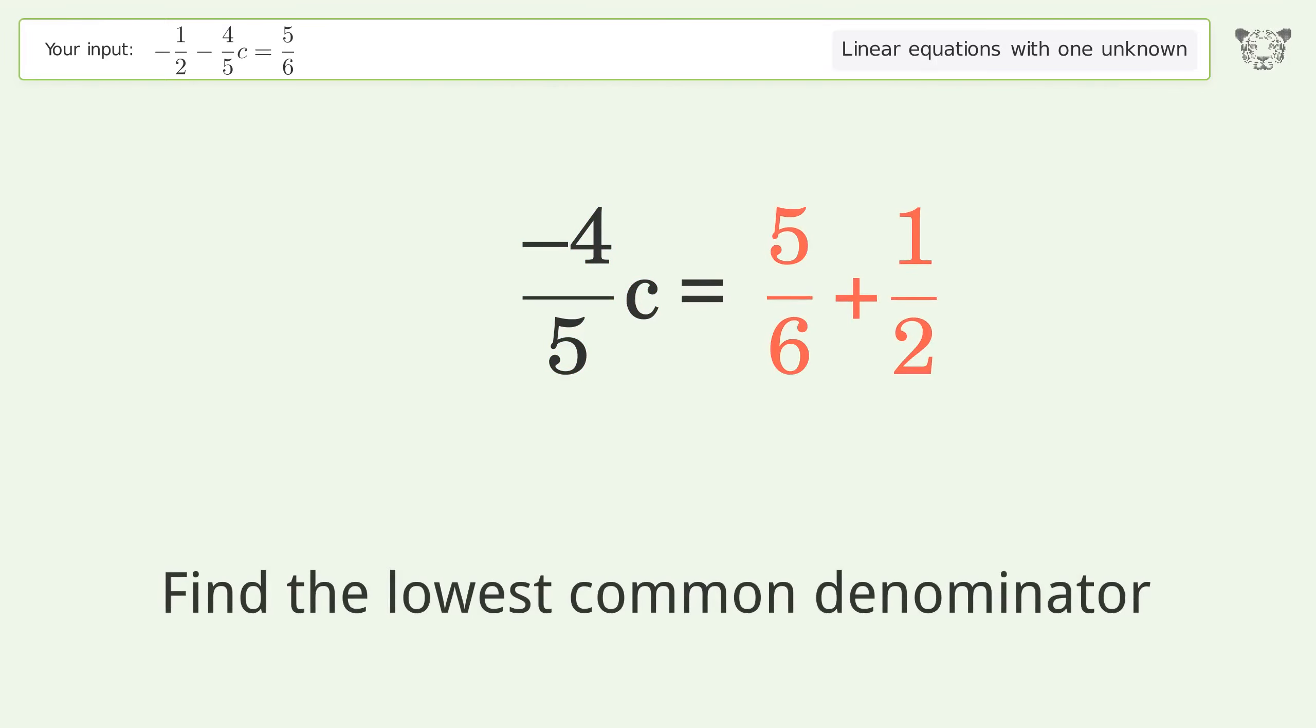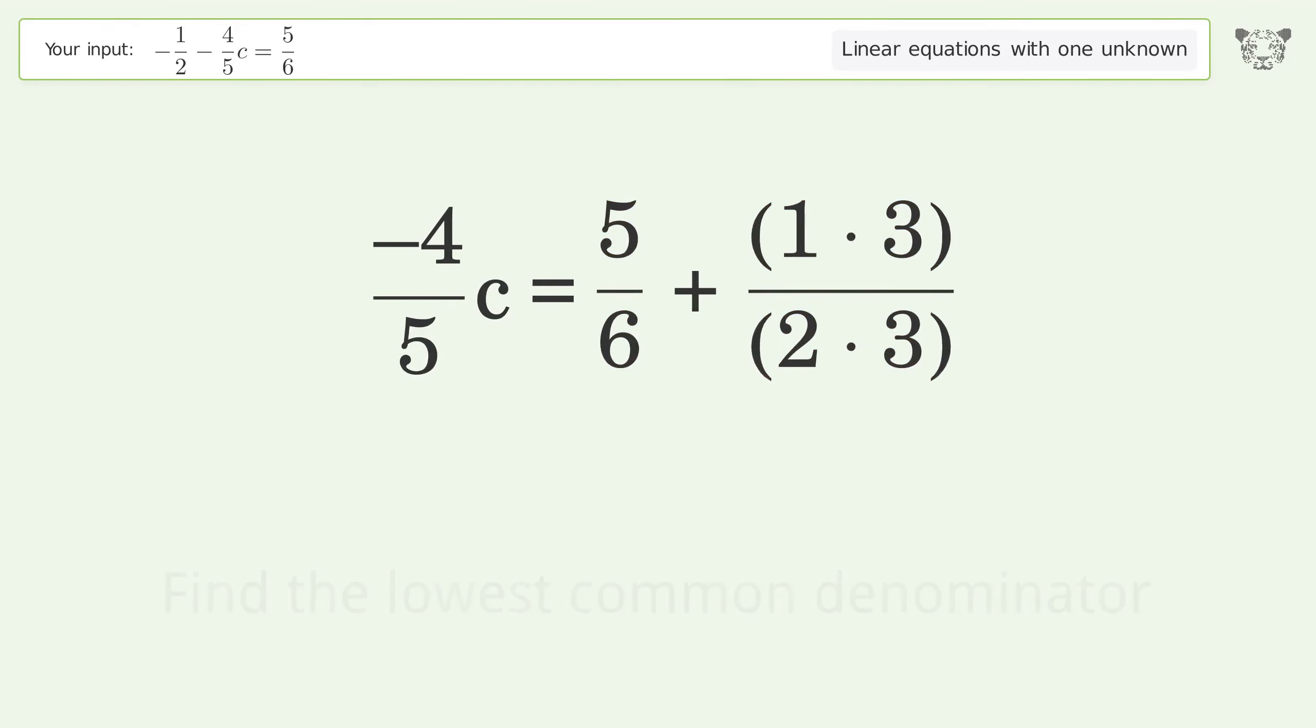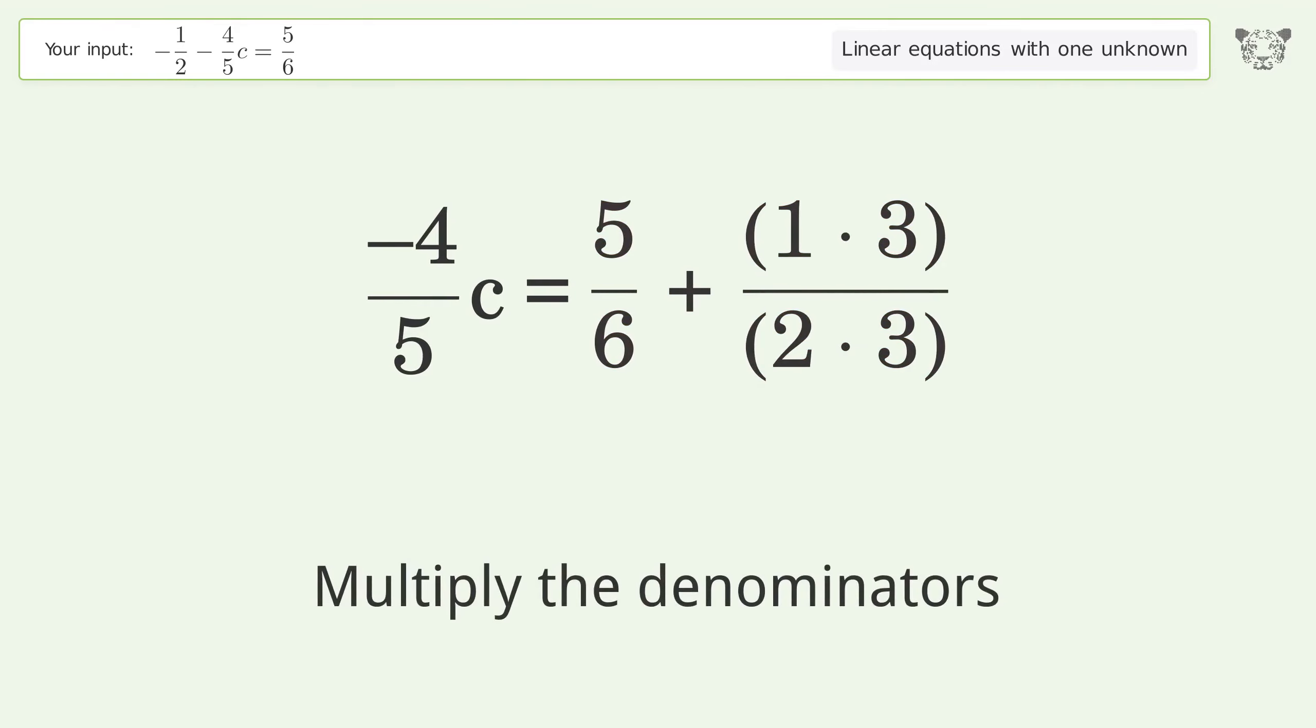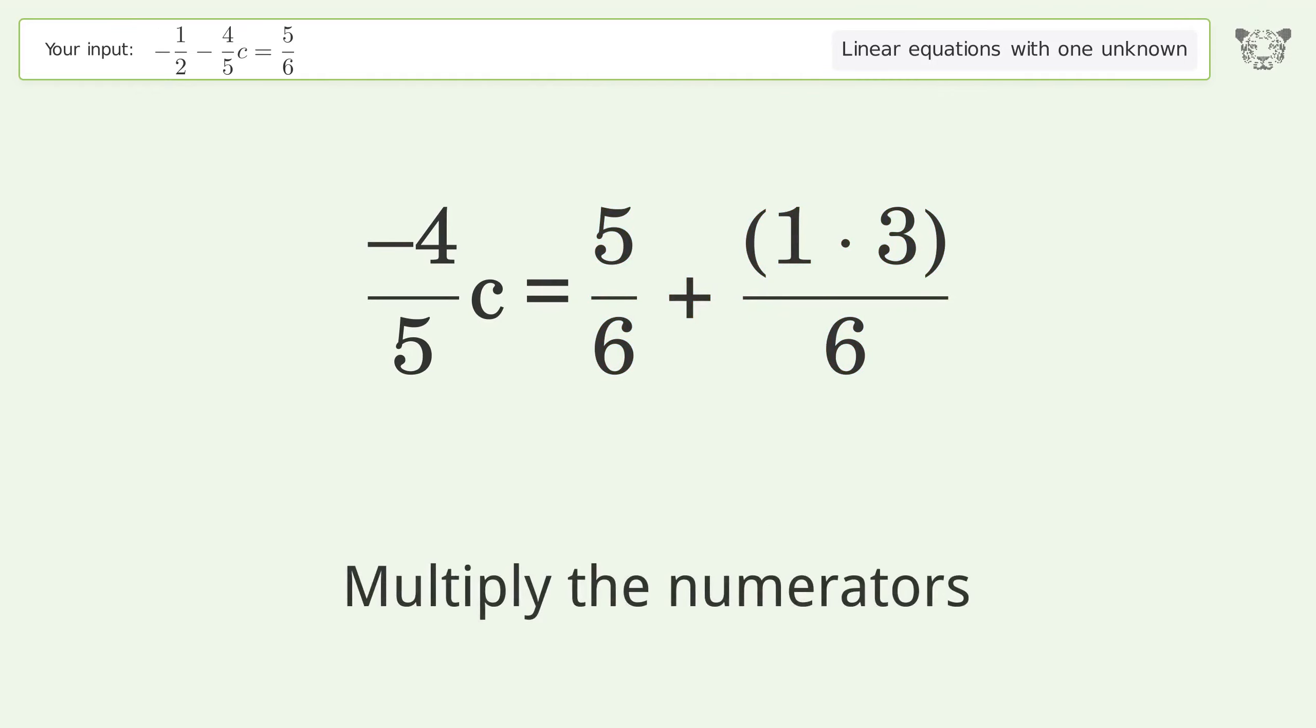Find the lowest common denominator. Multiply the denominators, then multiply the numerators.